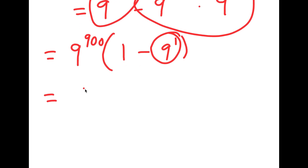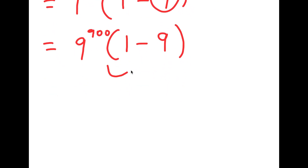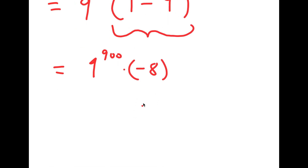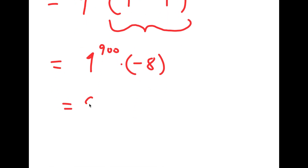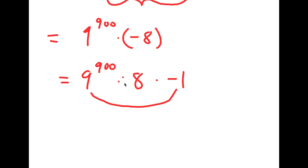So I get 9 to the power of 900 times 1 minus 9 to the power of 1. And 9 to the power of 1 is the same thing as 9, so I get 9 to the power of 900 times 1 minus 9. From here, I'm going to simplify what's in my parentheses: 1 minus 9 is negative 8. So I have 9 to the power of 900 times negative 8.